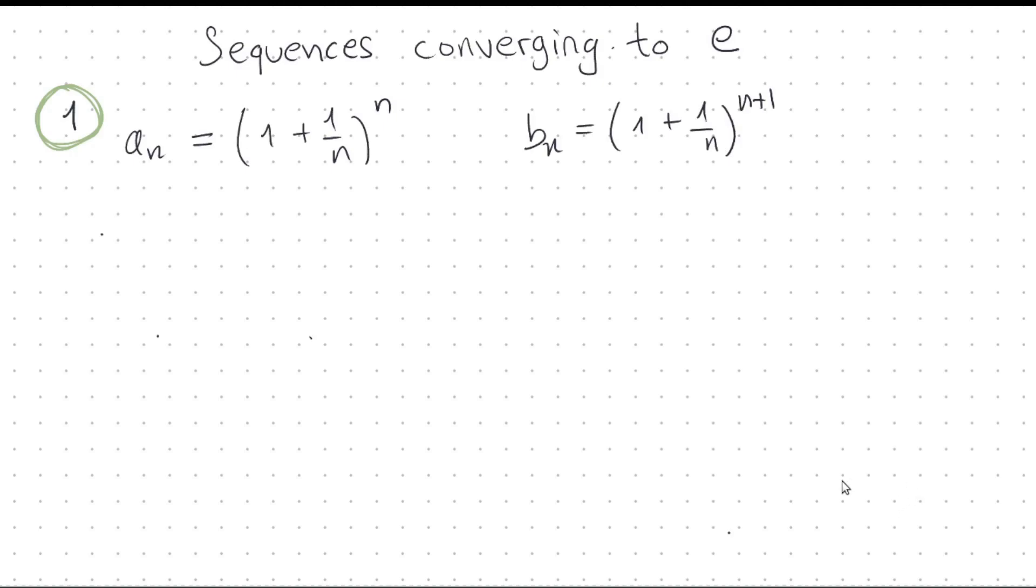Today we will look at two of the most important sequences in mathematics. This one here, a_n equals 1 plus 1 over n to the power of n, and b_n is 1 plus 1 over n to the power of n plus 1. Both of these sequences converge to the number e, which is a number of comparable importance to, for example, the number pi.